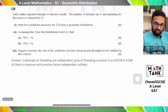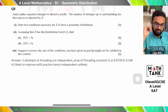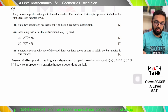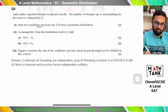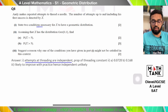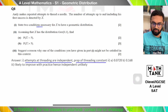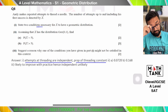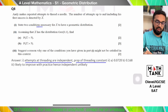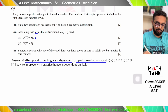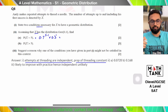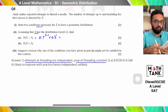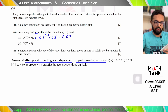Question 8. Andy makes repeated attempts to thread a needle. The number of attempts up to and including his first success is X. State two conditions necessary for X to have a geometric distribution: attempts are independent, and the probability of threading is constant. Assuming p = 0.3, find P(X=5): 0.7^(5−1) × 0.3 = 0.072.